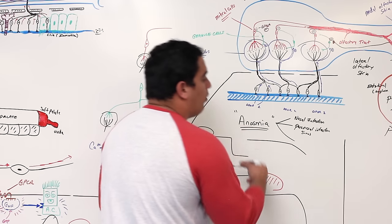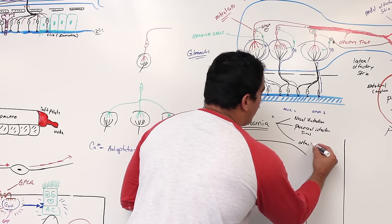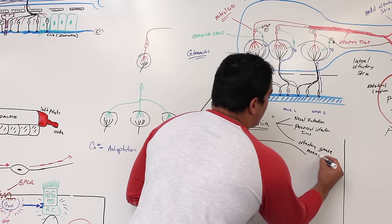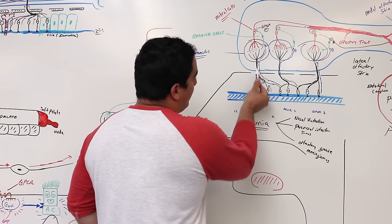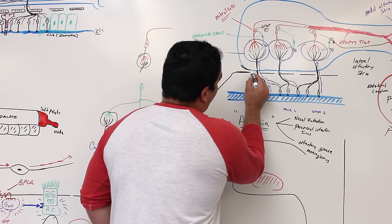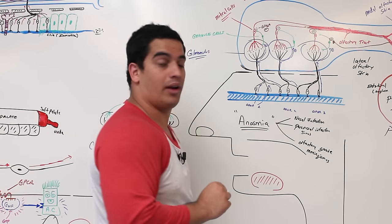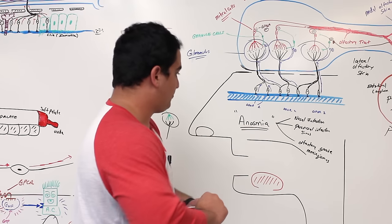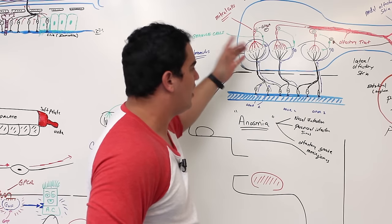Another cause of anosmia, besides infection — one of the next most common ones — is olfactory groove meningiomas. The reason why is that whenever these olfactory nerves are running up into the olfactory bulb, there is a periosteal layer of the dura mater and right underneath it the meningeal layer of the dura mater. So some type of tumor developing in this groove could compress or affect the olfactory nerves.